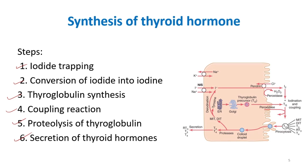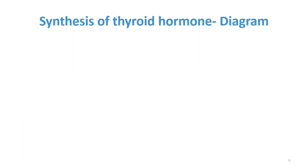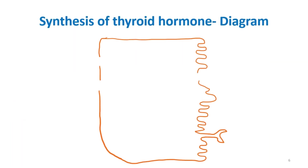Whenever synthesis is asked, it is important that you also draw a diagram. This diagram is taken from the textbook of physiology by Guyton and Hall. First, draw an outline of the thyroid cell. The first step is iodide trapping, which occurs via the channel called the sodium-iodide symporter. This channel transports iodide against a concentration gradient and requires energy via a sodium-potassium ATPase pump.